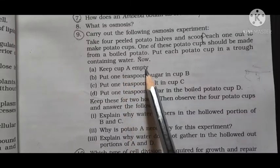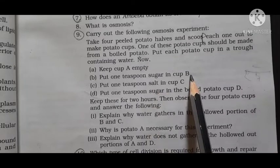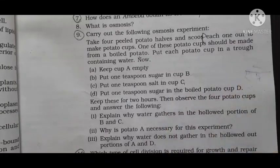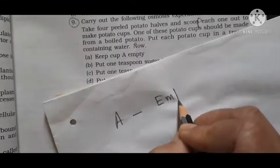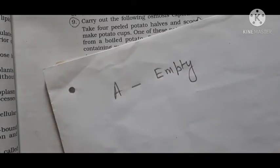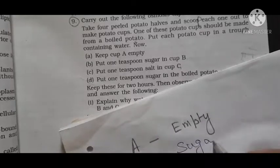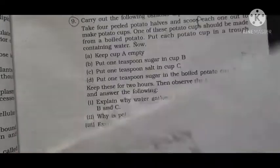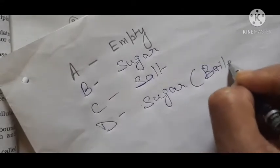Now put each potato cup in a trough containing water. Now keep cup A empty. Cup A empty, or potato cup A empty. That is unboiled. Put one teaspoon sugar in cup B. Put one teaspoon salt in cup C. Put one teaspoon sugar in boiled potato cup D. So in potato cup A you will not add anything. It will be empty. Now in potato cup B you will add sugar. And in C you will add salt. And D, which is made up of a boiled potato, you add sugar, but it is boiled.